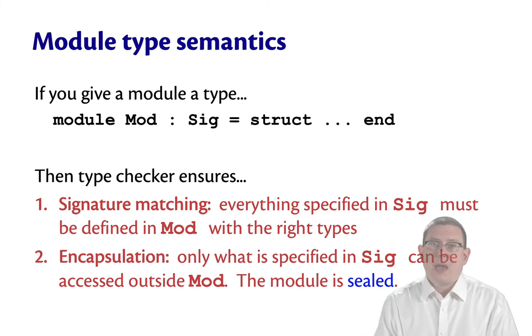And second, the type checker is going to ensure encapsulation. Only what is specified in sig can be accessed from outside of mod. We say that the module is sealed at that signature. It's sealed in the sense that you can't get anything else out of the module, only those names that have been identified in the signature.